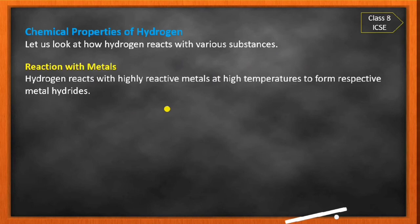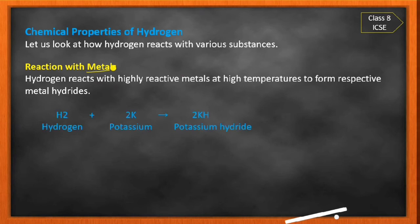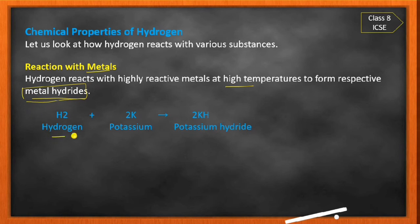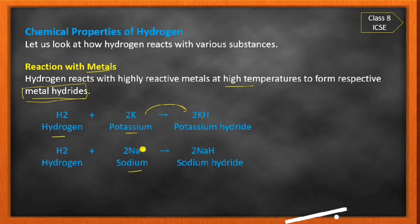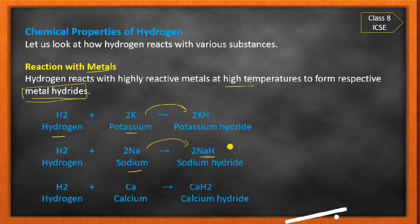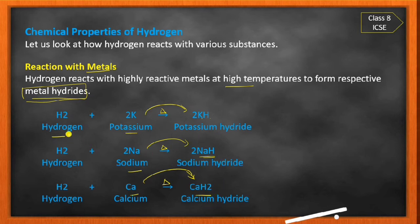Now the reaction with metals. Hydrogen reacts with highly reactive metals at high temperature to form their respective metal hydrides. For example: hydrogen with potassium gives potassium hydride (KH); hydrogen with sodium gives sodium hydride (NaH); hydrogen with calcium gives calcium hydride (CaH₂). These are examples of the reaction of hydrogen with metals.